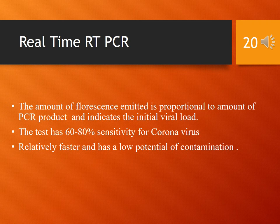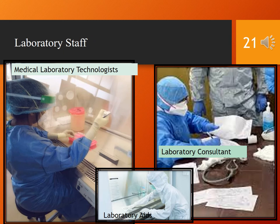The amount of fluorescence emitted is proportional to the amount of PCR product and indicates the initial viral load. The test has 60% to 80% sensitivity for coronavirus. It is relatively faster and has low potential for contamination. RT-PCR is performed by specially trained and qualified medical laboratory technologists, and a laboratory consultant validates the final result before releasing. Laboratory aids support these staff in cleaning and resetting the laboratory.